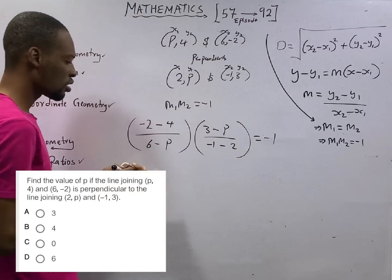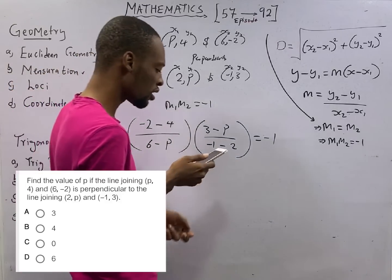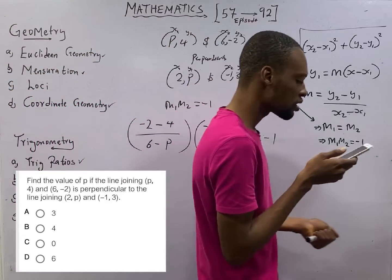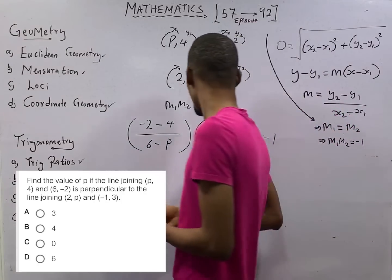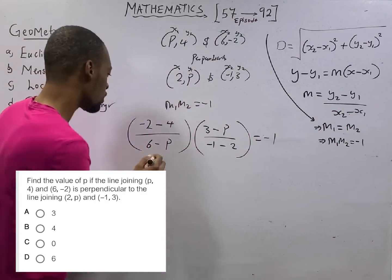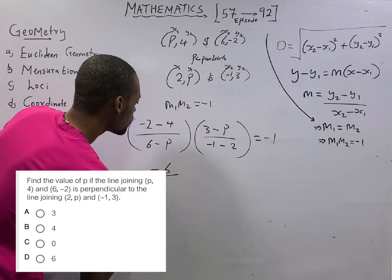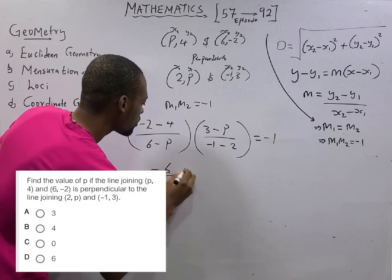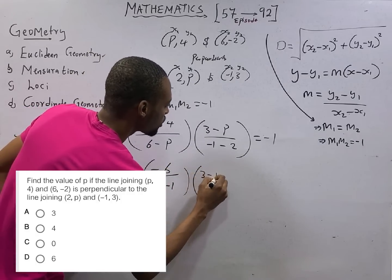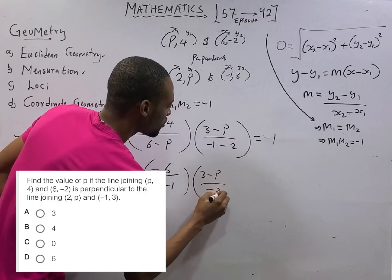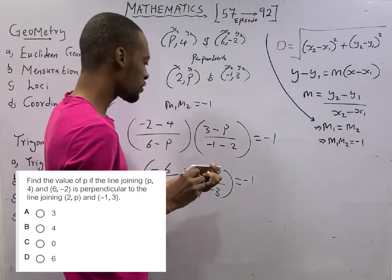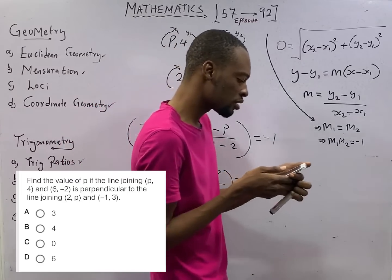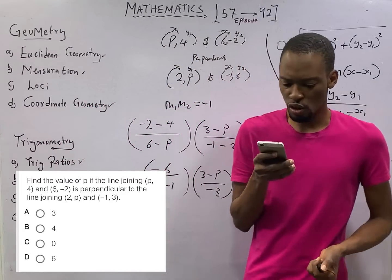Ladies and gentlemen, once you multiply this and make p subject of formula, you'll be able to arrive at p equals 4. It is a very simple step. You can actually make it easy for you to have minus 6 over (6 minus p) times (3 minus p) over minus 3 equals minus 1. So from here, solve and get the value of p to be 4. And that is option B.